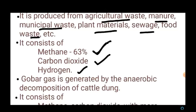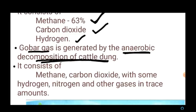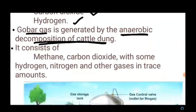Usually cattle feed on plants whose cell walls are made up of cellulose. Methane-producing bacteria present in the rumen of cattle help digest this cellulose. The excreta of cattle is called dung, commonly known as gobar. Gobar gas is generated by the anaerobic decomposition of cattle dung and consists of methane, carbon dioxide, with some hydrogen, nitrogen, and other gases in trace amounts.